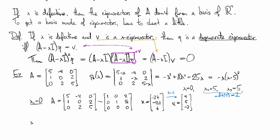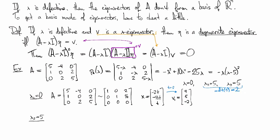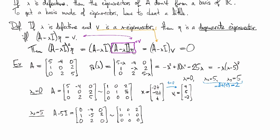Now when I do the second eigenvalue, lambda equals 5, I'm looking at A minus 5I. And this becomes [0 -4 0; 1 -5 2; 0 2 0]. And row reducing that gets me to [1 0 2; 0 1 0; 0 0 0].